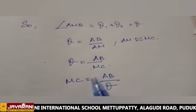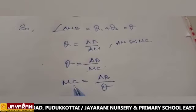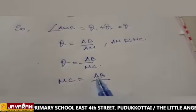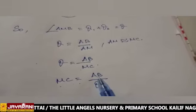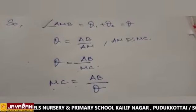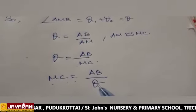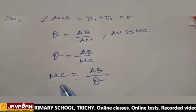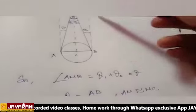Then, if you want to find out MC, that is the distance between the earth and the moon, MC is equal to AB, that is the radius of the circle. Then, we have to know the theta value. If you know AB and theta, we can easily find out the distance between the moon and the earth, the value MC.